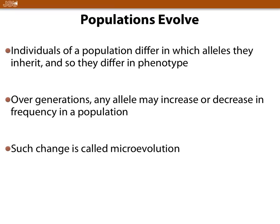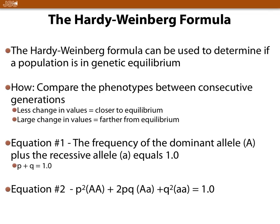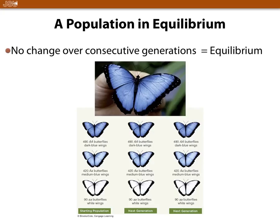Populations evolve — we talked about that. The Hardy-Weinberg equation is used to look at how fast a population is changing based on changes in allele frequencies. If an allele is changing its proportion over time, that implies evolution. If an allele is not changing its frequency, that implies no change — closer to genetic equilibrium. There's no change over consecutive generations — that's genetic equilibrium.